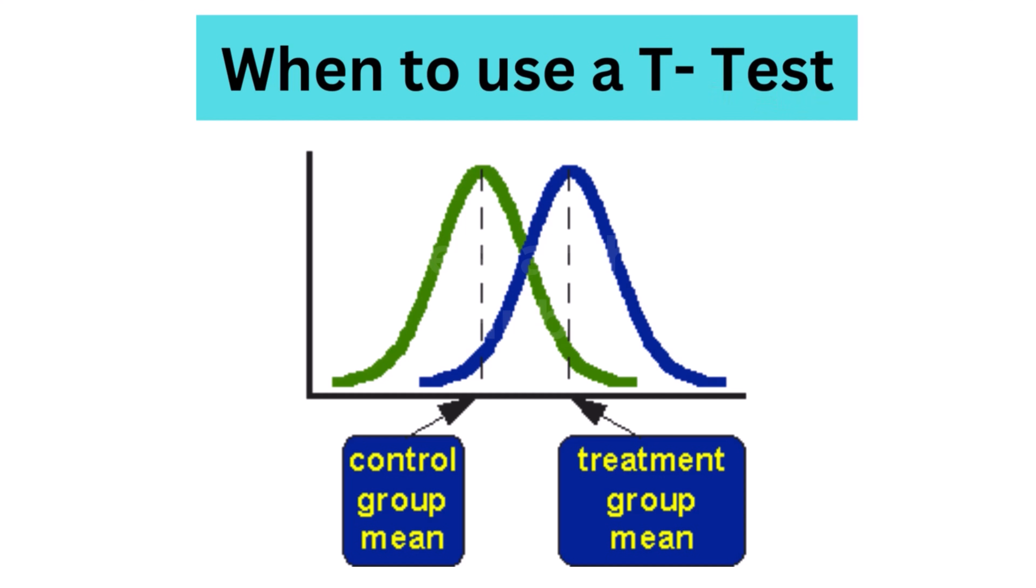When to use a t-test? A t-test can only be used when comparing the means of two groups, also known as pairwise comparison. If you want to compare more than two groups, or if you want to do multiple pairwise comparisons, use an ANOVA test or a post-hoc test.